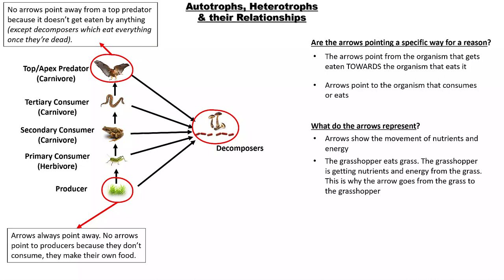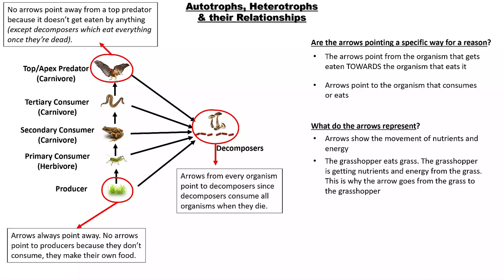All organisms — grass, grasshoppers, frog, snake, and hawk — when they die, all get consumed by decomposers. All arrows from every organism point to decomposers because they eat everything when they die. Examples of decomposers are bacteria and fungi, things like mushrooms and mold. You have to know two examples of decomposers.